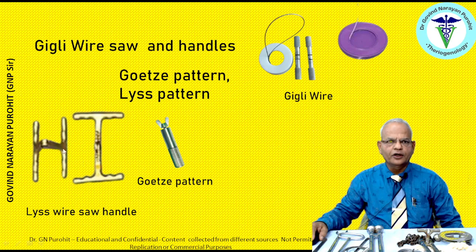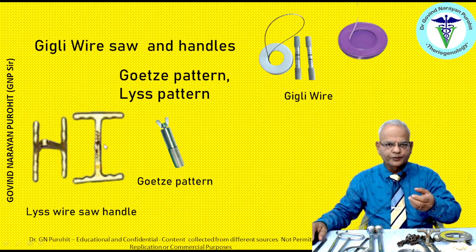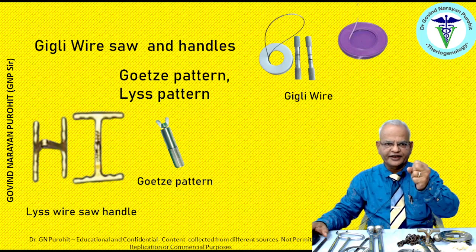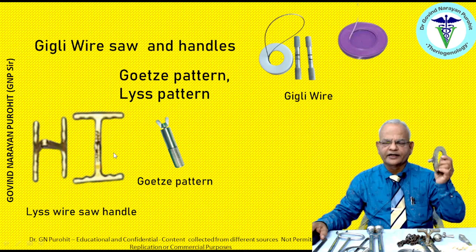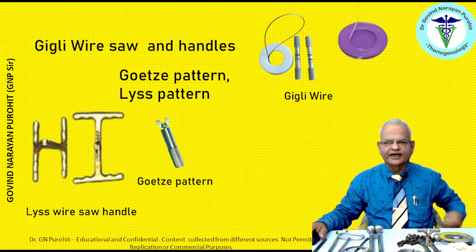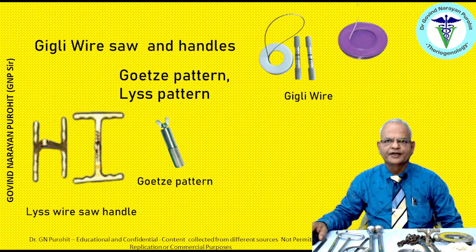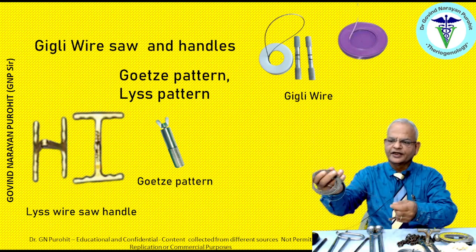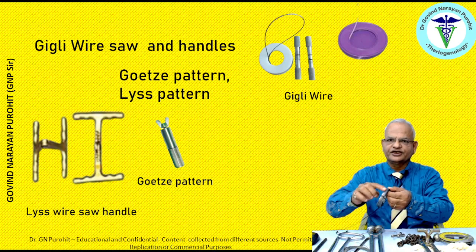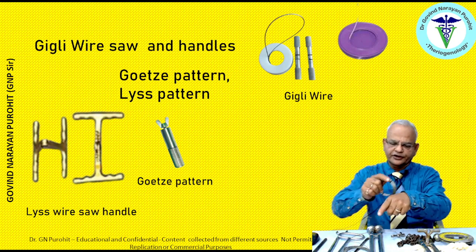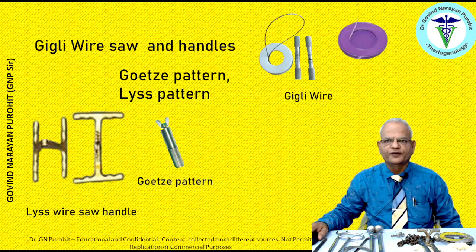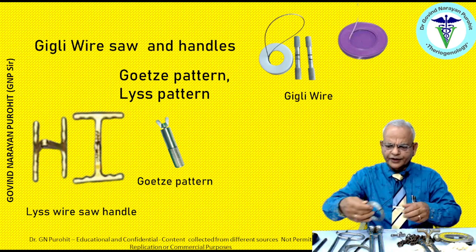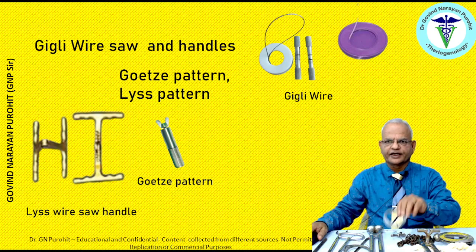The List wire saw is foldable — place the wire in between, tighten it, and use it for sawing action. The Goat-zip pattern wire saw holder is also available. The List wire saw handle and the Polsen pattern are much better than the other two because if the wire accidentally slips it can injure the obstetrician's hand. The Giggly wire saw has serrations which, when rubbing continuously on tissues, cut through them including bones — useful for percutaneous fetotomy.